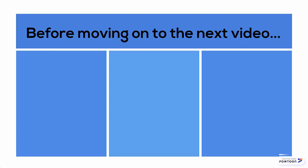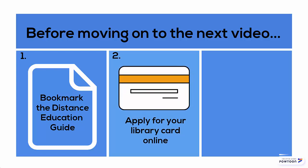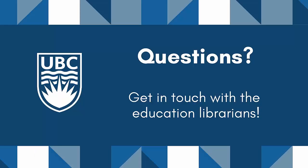At this point, you should be ready to get started with the UBC Library as a distance student. Before moving on to the next video, be sure to bookmark the Distance Education Library Guide, apply online for your library card, and register for delivery services. You can either consult the Distance Education Guide or get in touch with the Education Librarians for answers to any questions you still have about Distance Services.